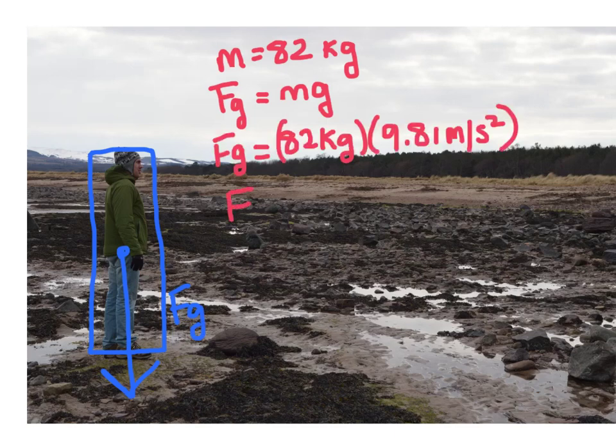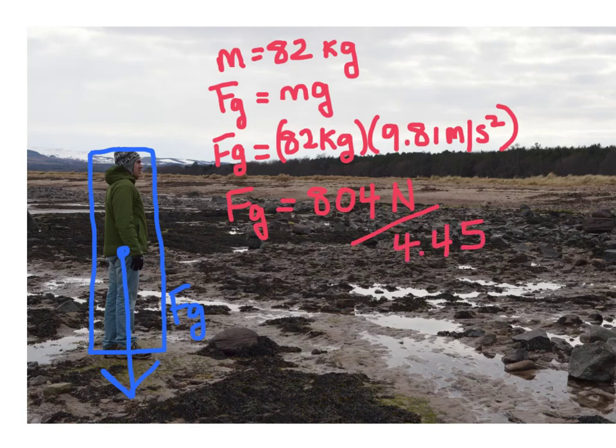And so my weight, in other words the force of gravity, is going to be equal to about 804 newtons. Now there are 4.45 newtons in a pound, so if I divide this number by 4.45, I have a weight of about 181 pounds.